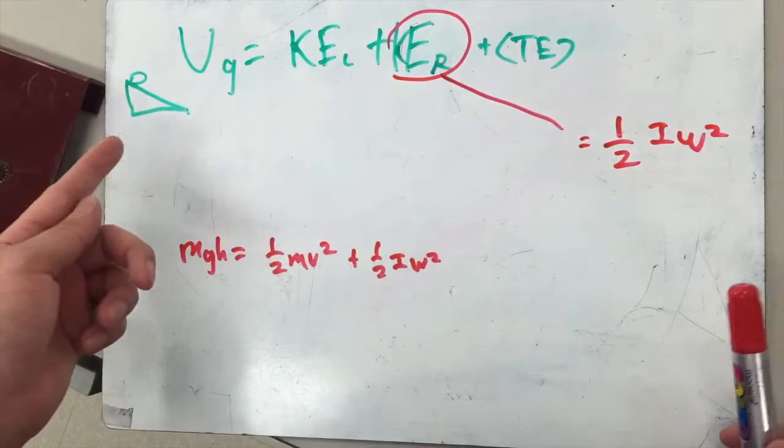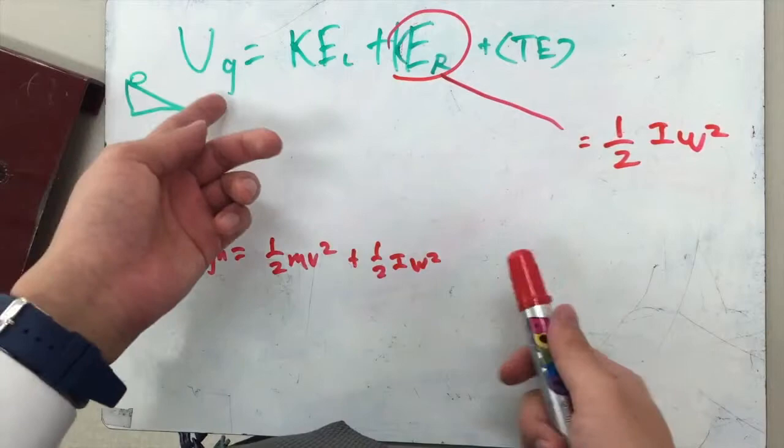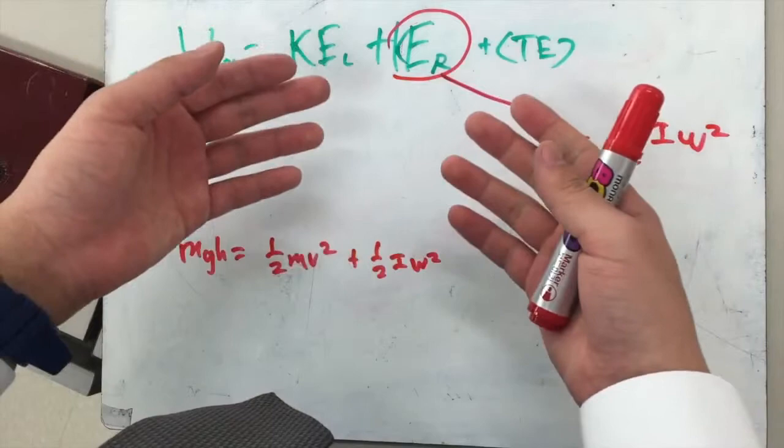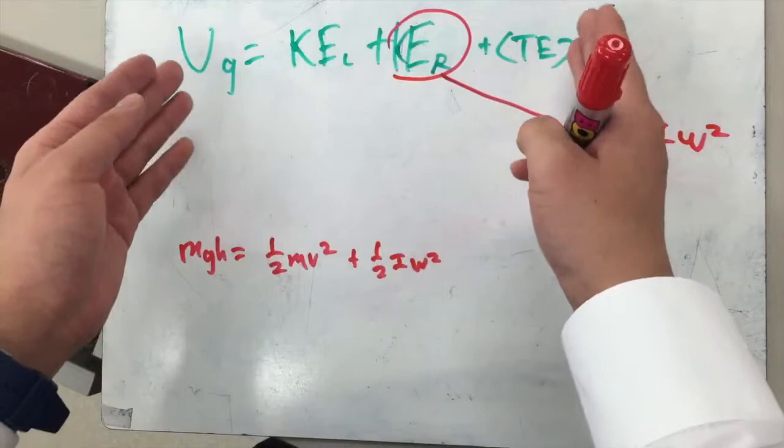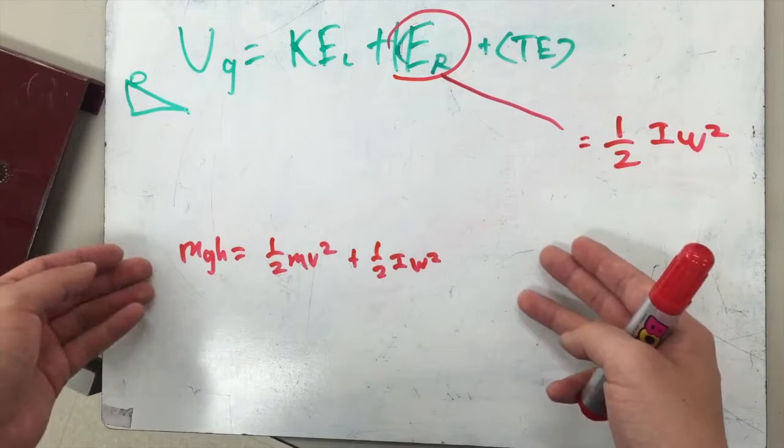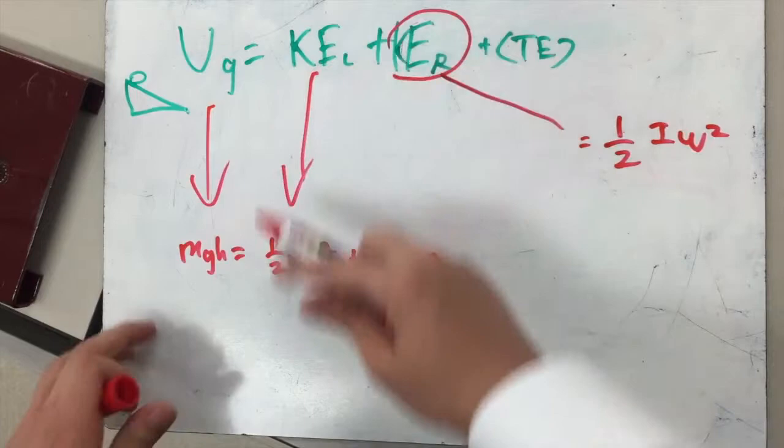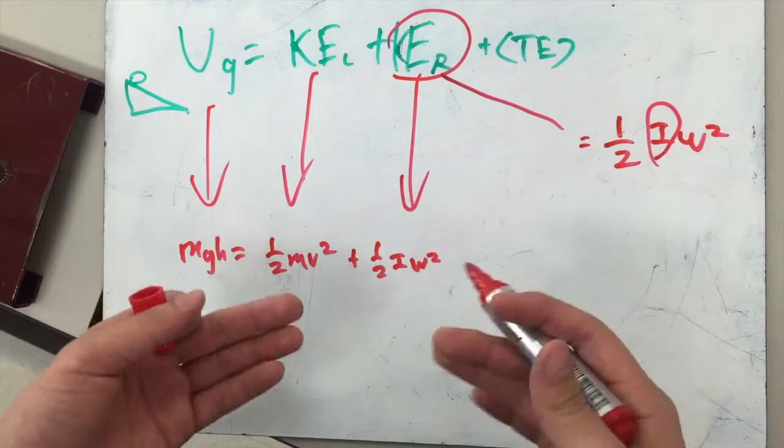Now that we know the difference between linear kinetic energy and rotational kinetic energy, let's take a look at this equation. For the conservation of energy, if an object is on the top of an incline, then we can say that all its energy is in gravitational potential energy UG, and KEL is linear kinetic energy, and rotational kinetic energy which is KER. We can disregard the thermal energy for now, and we can set it equal to MGH, which is the gravitational potential energy, then KEL 1/2 mv squared, linear kinetic energy, and then rotational kinetic energy 1/2 I omega squared, I being rotational inertia which we have explained earlier, and omega being the rotational velocity.